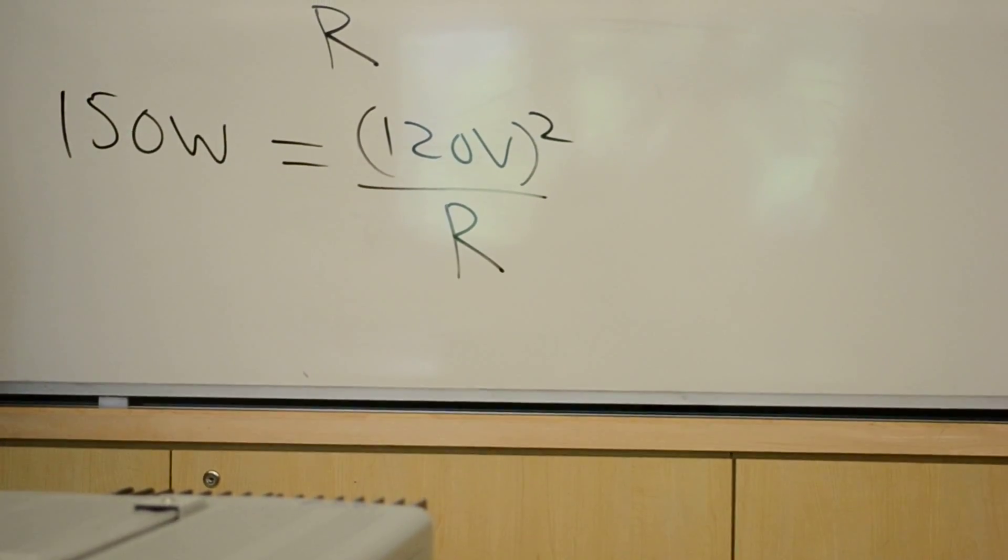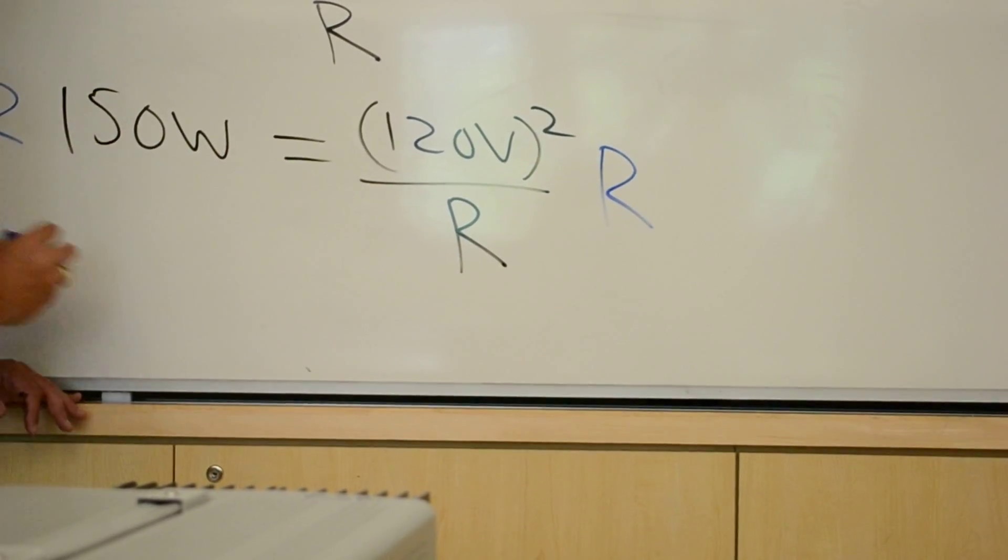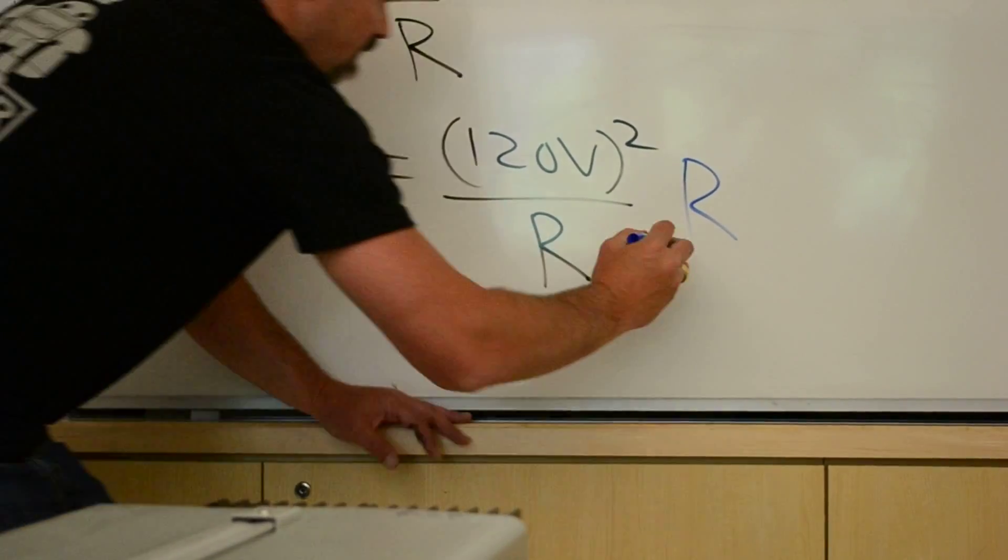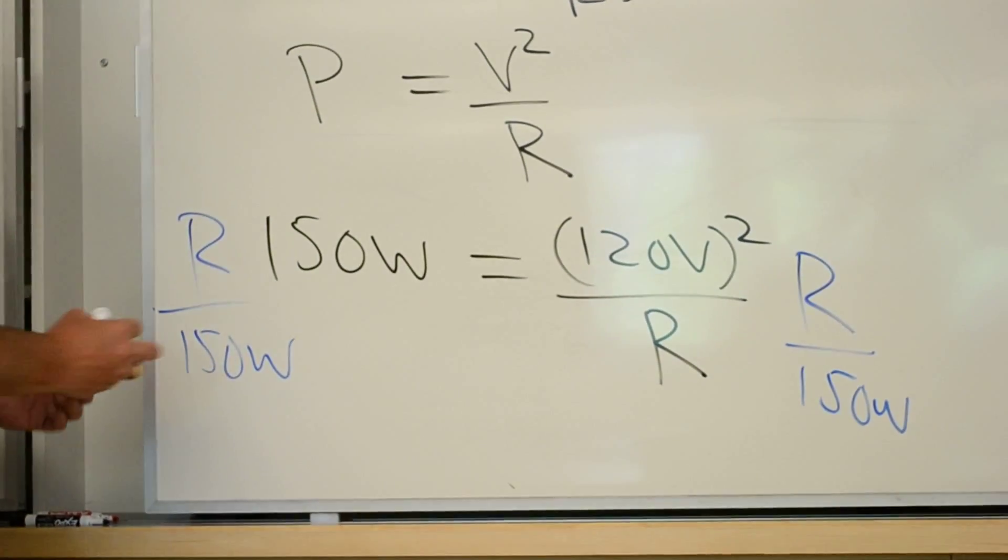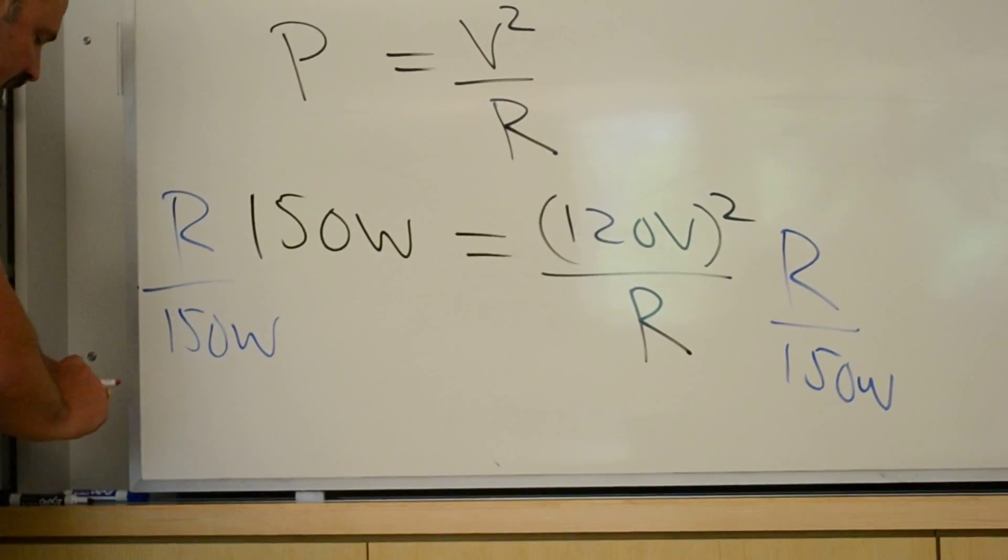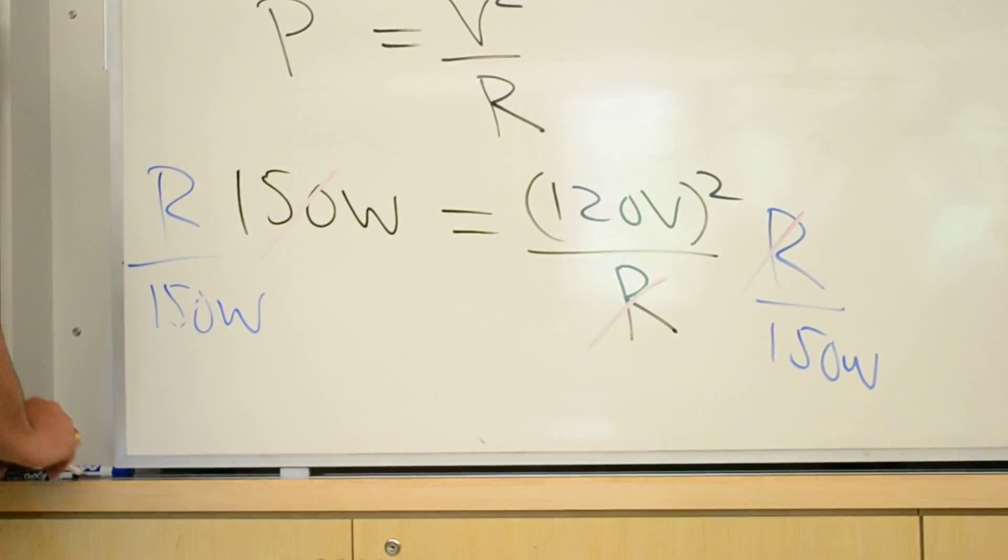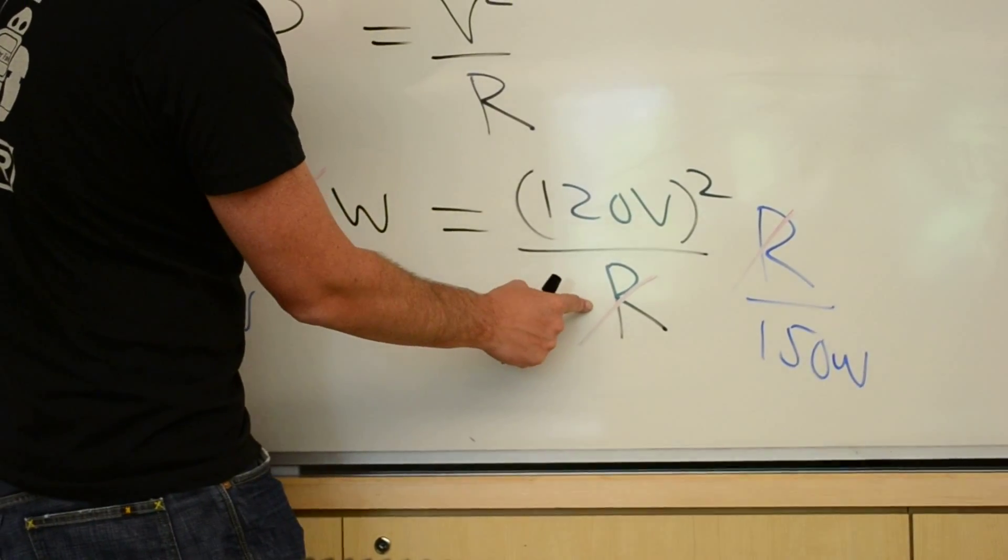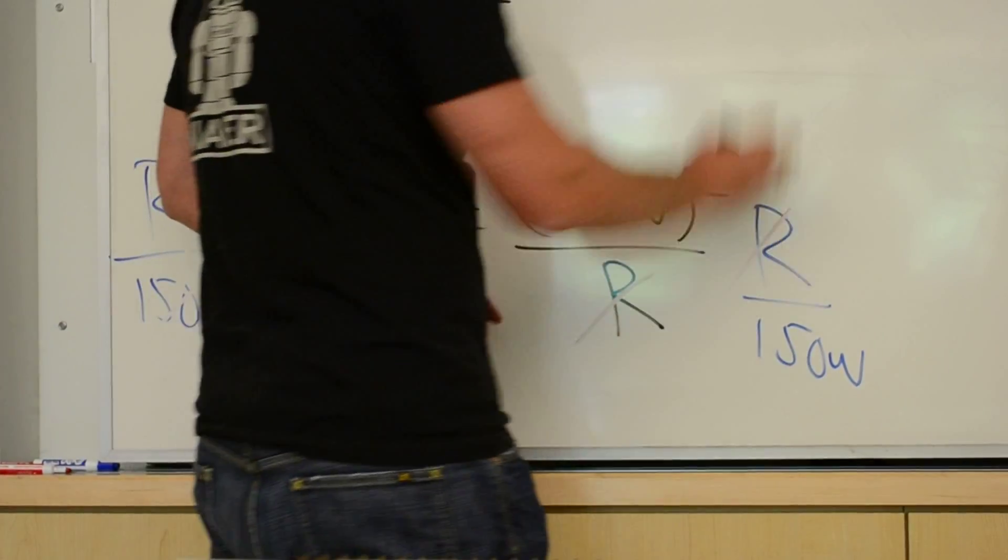If we just do a little algebra, multiply both sides by R, and then divide both sides by 150 watts. Remember, whatever you do to one side, you have to do to the other side. And then you can see that these guys cancel. And what do we have left? We have resistance equals 120 volts squared divided by 150.